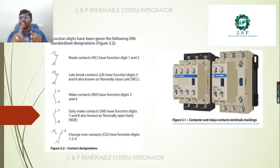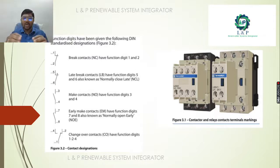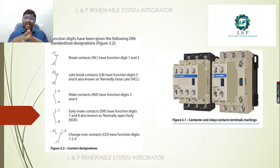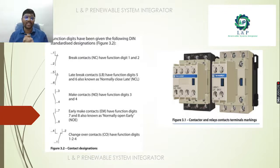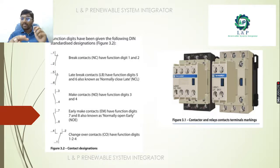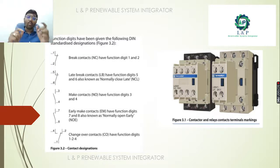If the contact is making (normally open), the function digit will be 3 and 4. For an early make contact (normally open early), the function digit will be 7 and 8. For a changeover contact, the function digit will be 1, 2, and 4.